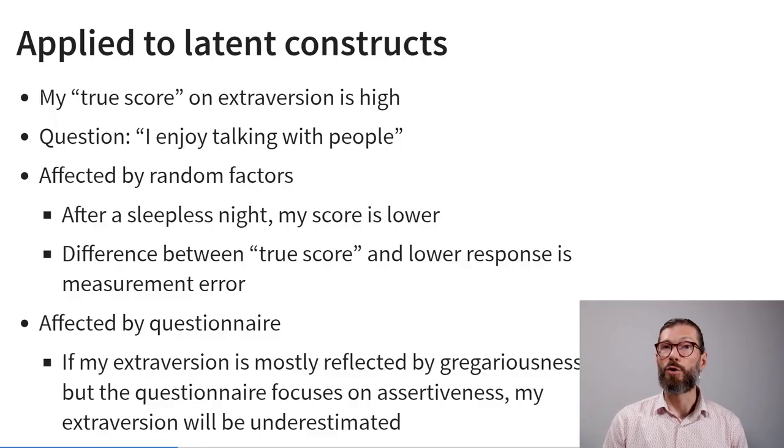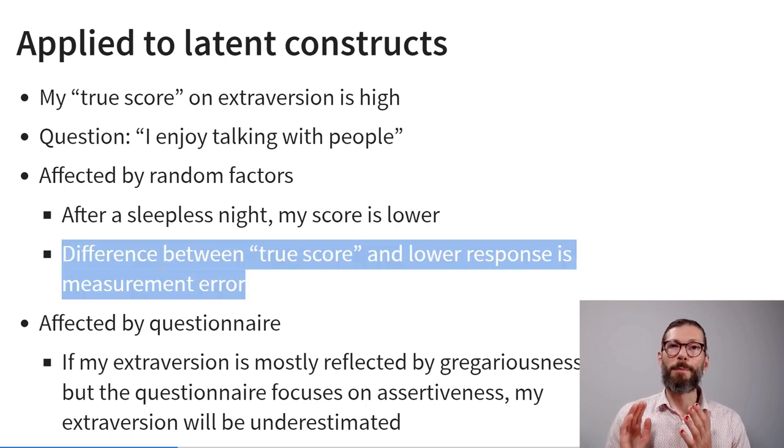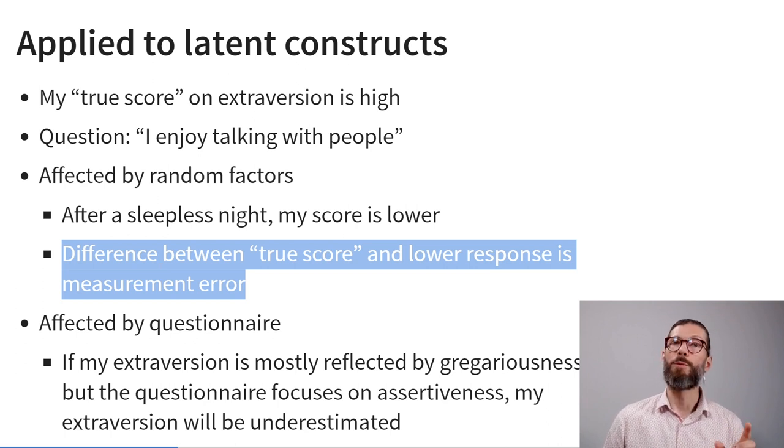We can apply these same principles to latent constructs. Assume my true score on extroversion is high — so when I read 'I enjoy talking with people,' I'm inclined to respond favorably. However, my response is also influenced by random factors: after a sleepless night, my response will be slightly less enthusiastic. That difference between my true score and my item response is called measurement error.